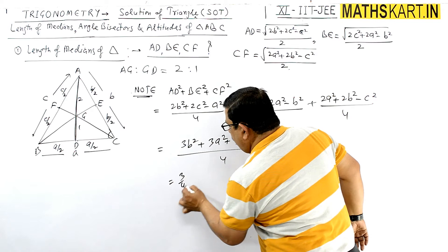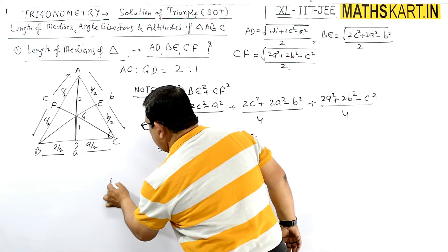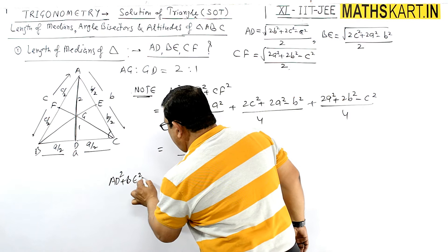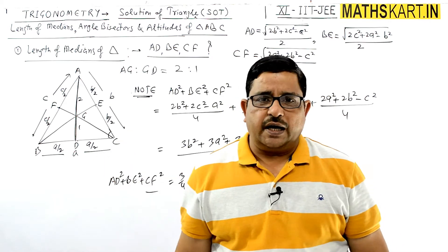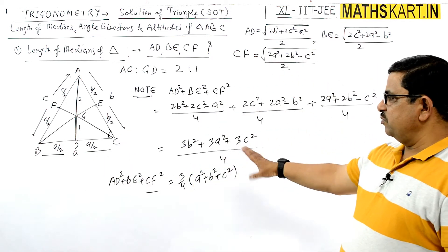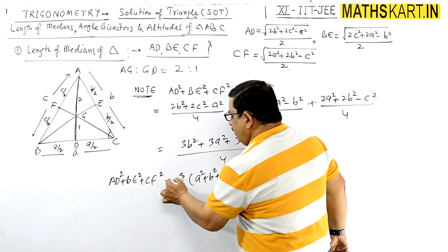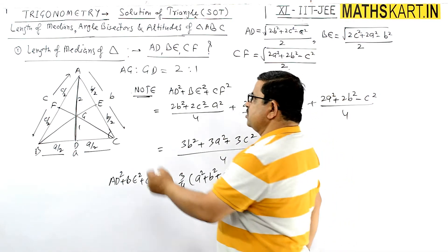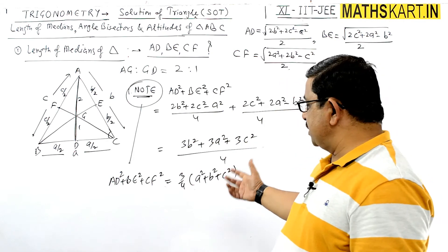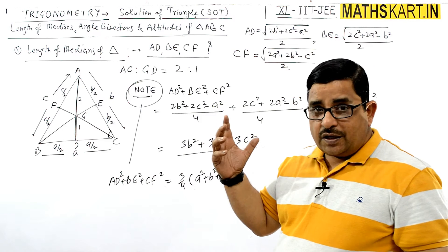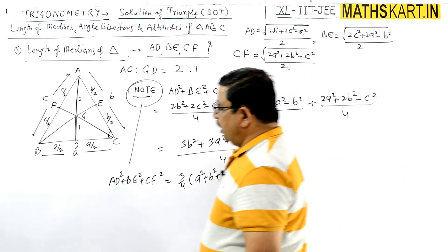So we can write: AD² + BE² + CF² = (3a² + 3b² + 3c²) / 4 = (3/4)(a² + b² + c²). This is one more useful deduction — the sum of the squares of the three medians equals three-fourths of the sum of the squares of the three sides.